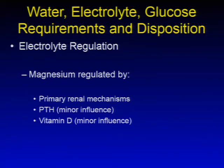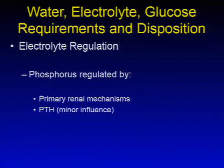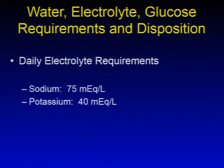Magnesium is regulated by primary renal mechanisms, with parathyroid hormone and vitamin D as minor influences. Phosphorus is regulated by primary renal mechanisms, with parathyroid hormone as a minor influence. Continuing with water, electrolyte, glucose requirements, and disposition, we'll talk about daily electrolyte requirements.